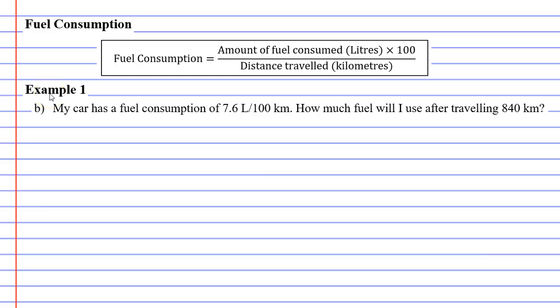Now we will move on to question B, which says that my car has a fuel consumption of 7.6 litres per 100 kilometres, which is your fuel consumption. How much fuel will I use after travelling 840 kilometres, which is the distance you are travelling? So what you're actually trying to find here is the amount of fuel consumed.